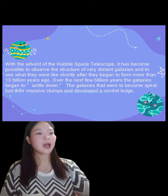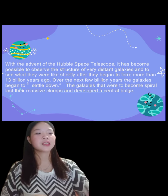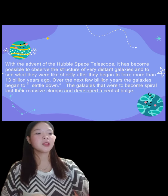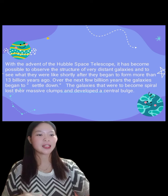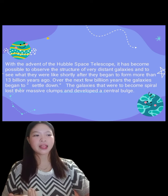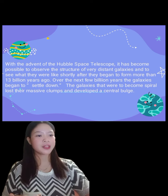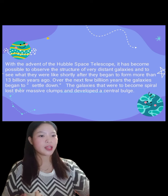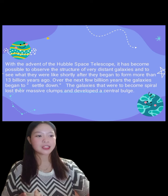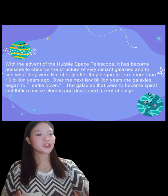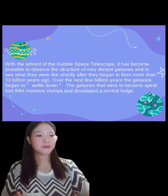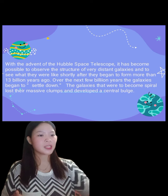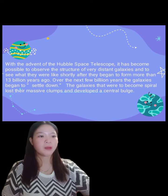With the advent of the Hubble Space Telescope, it has become possible to observe the structure of very distant galaxies and to see what they were like shortly after they began to form more than 13 billion years ago. Over the next few billion years, the galaxies began to settle down, and those that were to become spiral galaxies lost their massive clumps and developed a central bulge.